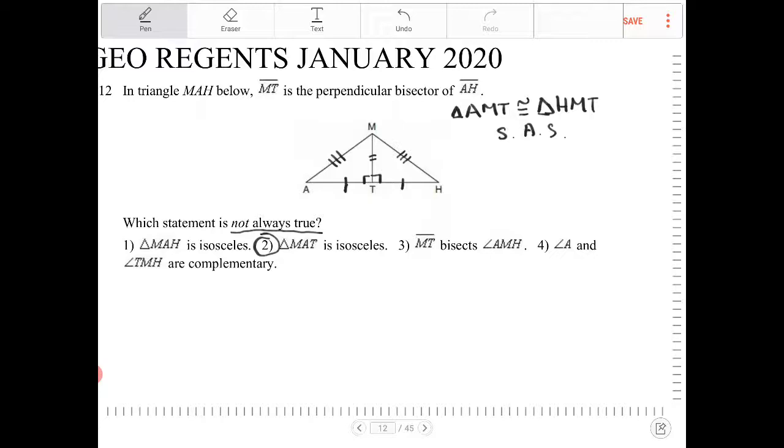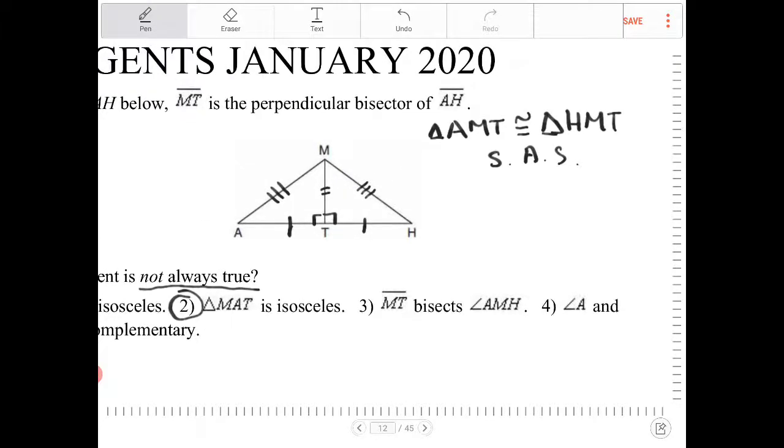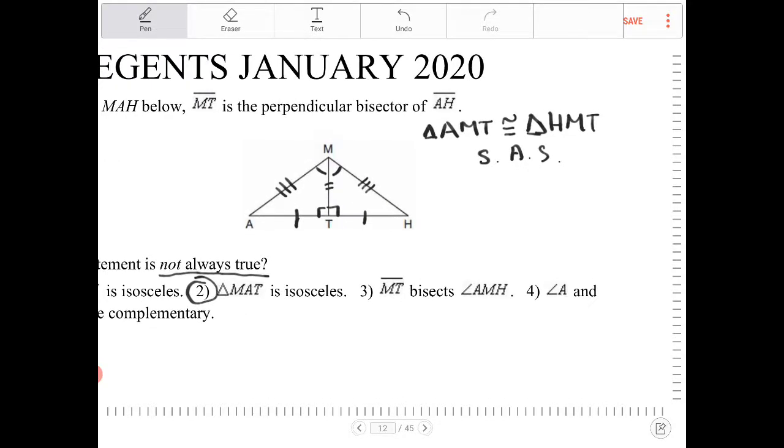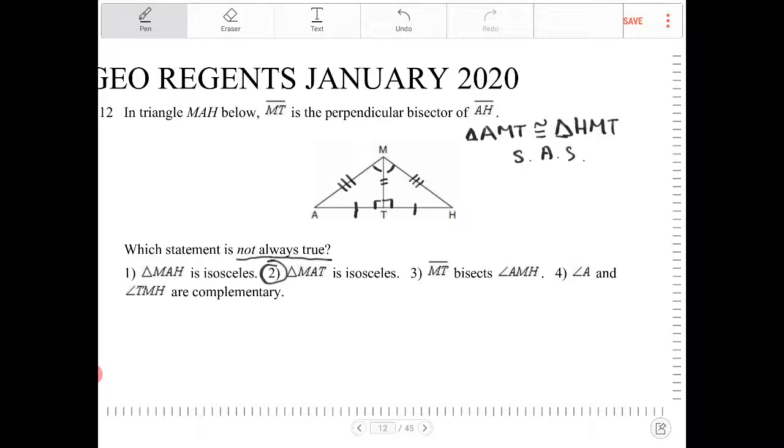So option two would work here. But let's read the other two options there. MT bisects angle AMH. Does that work? Well, as a result, these angles therefore must be the same because of, again, CPCTC, right? Those two triangles are the same. So angle AMT and HMT must be congruent.